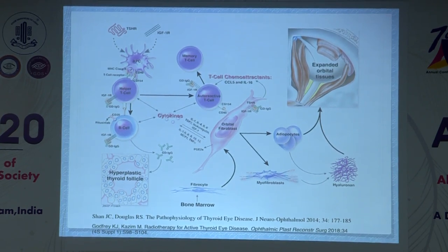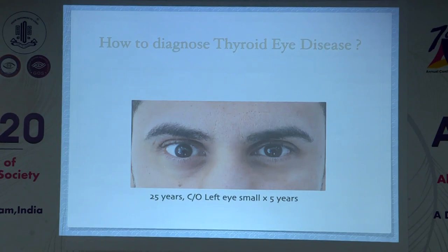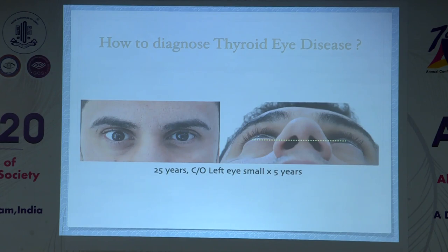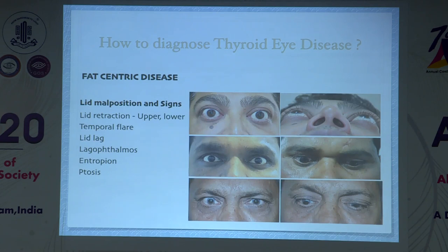Let's start with a case: a patient complained of left eye being small for five years. He was unaware that his right eye was actually involved — he had definite upper lid retraction, lower eyelid fat prolapse, and proptosis of four millimeters in the right eye. Depending on subjective patient complaints, we might diagnose them as having left eye enophthalmos, highlighting the importance of careful examination.